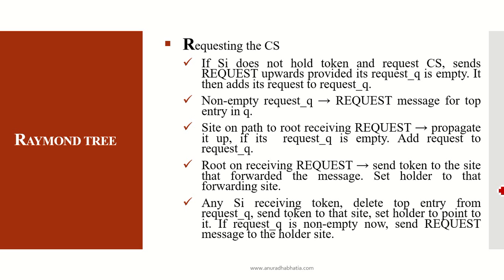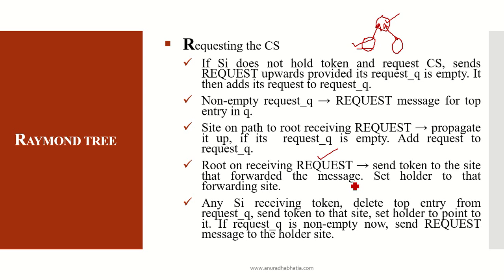The site on the path to root receiving the request propagates it upwards. For example, if a node is requesting for a critical state token, the message is sent to its parent node pointing outward on top. The request by this node is added to the request queue. When the root receives the request, it sends the token to the site that forwarded the message and sets the holder to the forwarding site. If this root has the token it will release it; if done, else it passes the message to the upper node which holds the token.